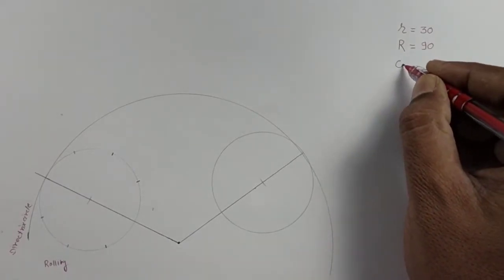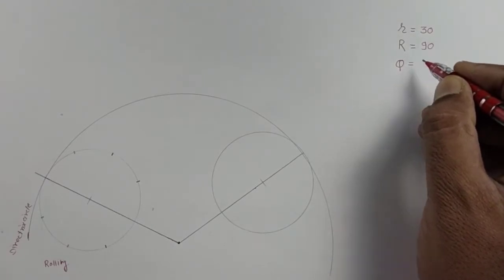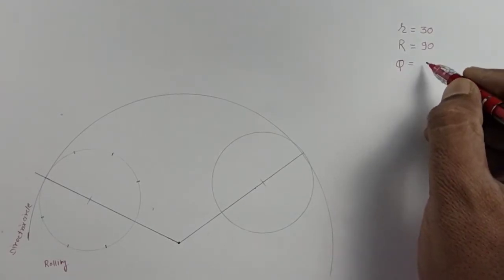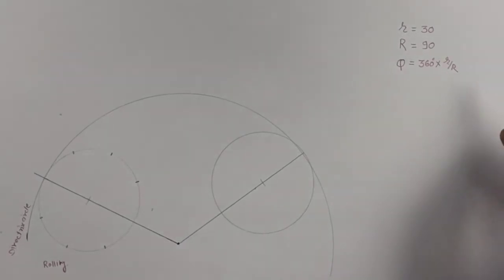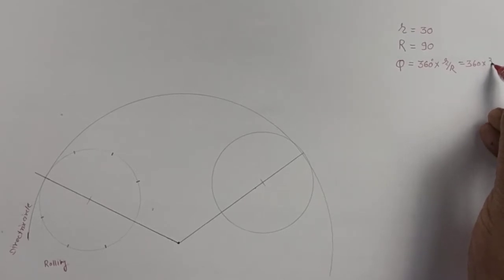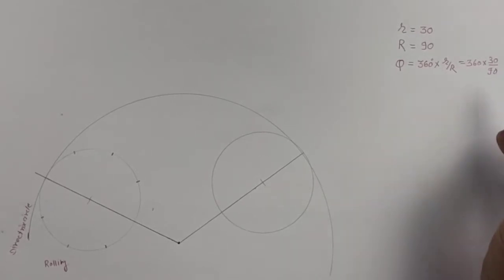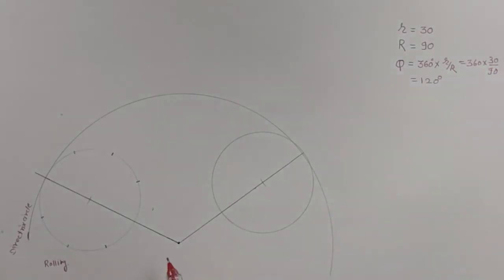When we calculate the angle theta — the path traveled by the rolling circle on the diating circle — theta equals 360 multiplied by small r divided by capital R. Substituting: 360 into 30 by 90, our answer is 120 degrees. So we take a 120 degree angle on the diating circle, where our rolling circle rolls in one revolution.